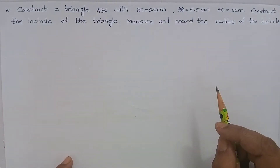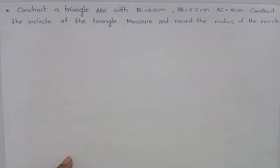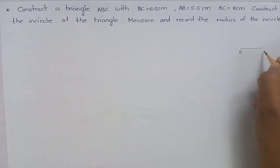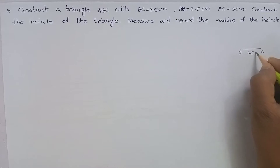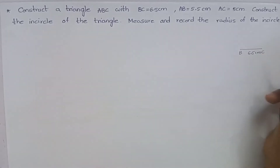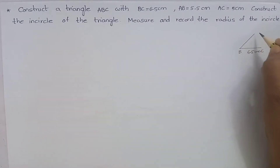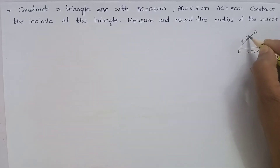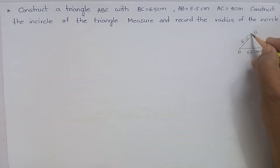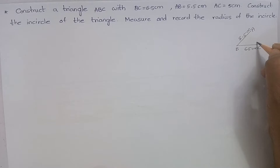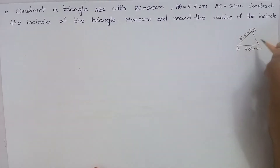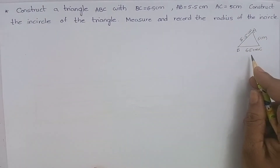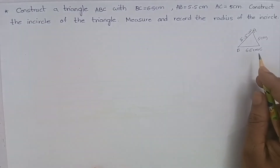First, let me draw a rough diagram. BC is 6.5 cm, AB is 5.5 cm, and AC is 5 cm. Let's construct a triangle according to this measurement.